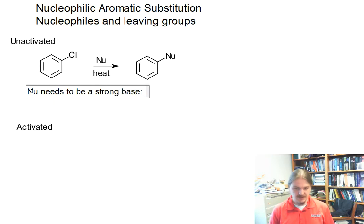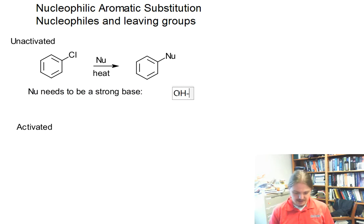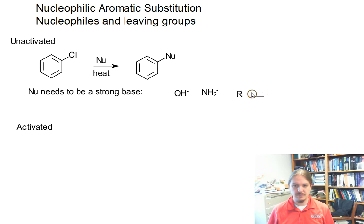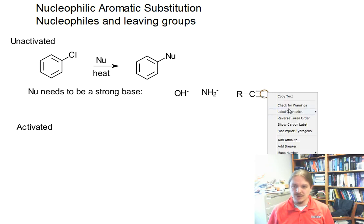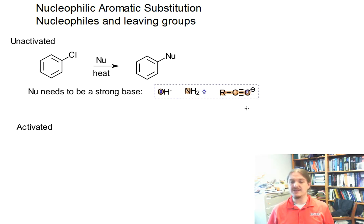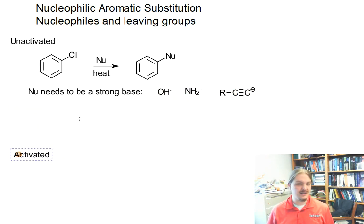The nucleophile needs to be a strong base. So we're talking about peroxide, amides — I've used these examples in other videos — and terminal acetylide anions. These things are all really strong bases. One of the reasons we need really strong bases is because this mechanism actually involves an elimination as its first step, and so only strong bases are going to do this.